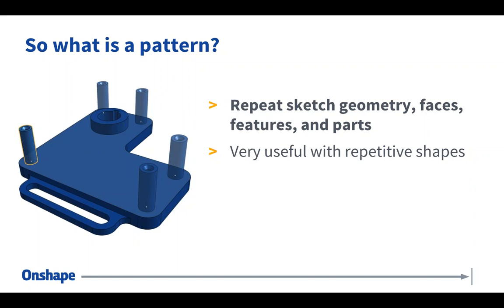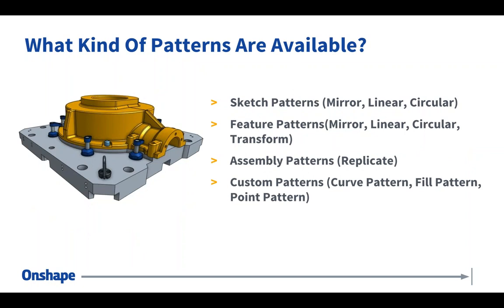You use patterns where you have repetitive shapes. If you find yourself adding a circular boss in all these corners, or adding a circular boss evenly spaced at a certain distance — those are all examples of repetitive shapes you can simplify with a pattern. In Onshape, just about anything can be patterned. For sketches, we have a mirror command and linear and circular patterns for sketch entities. We also have a mirror, linear, and circular feature pattern.